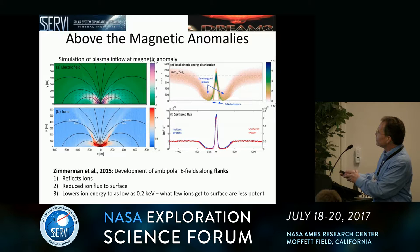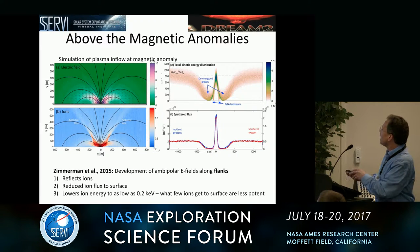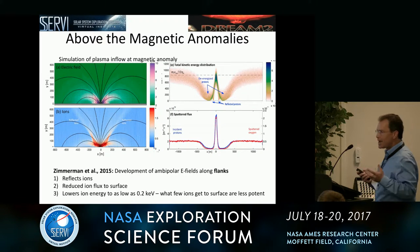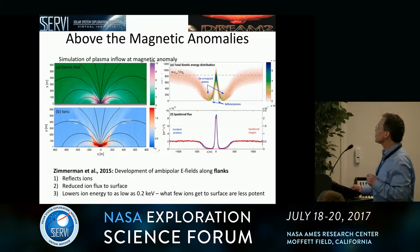Here's the magnetic anomaly with the dipole center in the center. Electric fields form along what I call the flanks — really in regions where you get more horizontally oriented magnetic fields. You get these reflected ions. Also, because of these electric fields, the energy of these incoming ions — incoming protons — gets slowed considerably from 1 keV down to maybe a couple hundred eV, and as a consequence the ions are less potent when they interact with the surface. So you get reflected ions, an overall reduction in ion flux, and a lower energy, making them less potent.